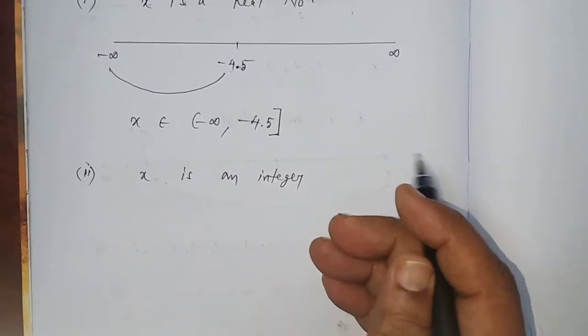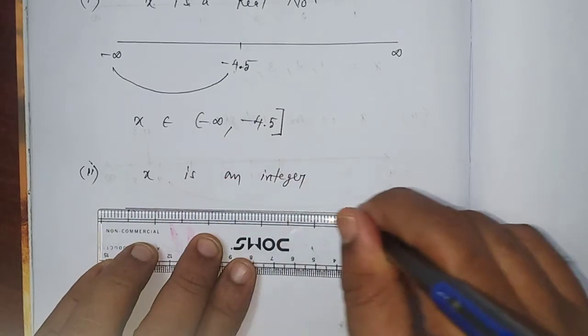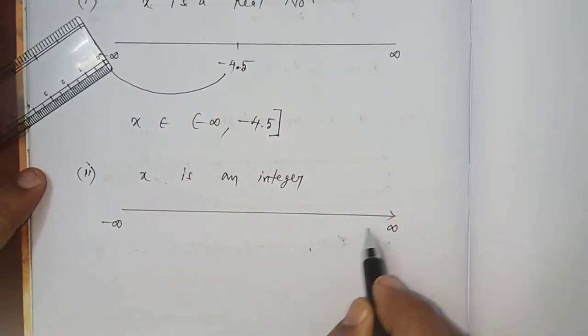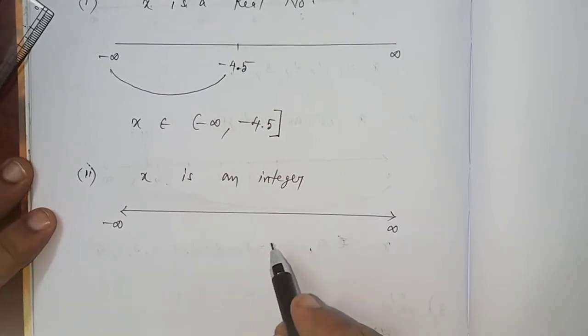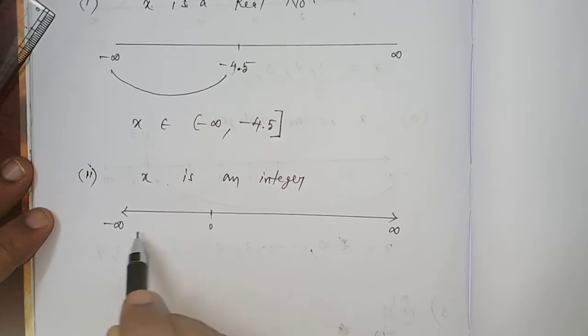Integer number line. Minus infinity, plus infinity, -4.5. I take here 0.